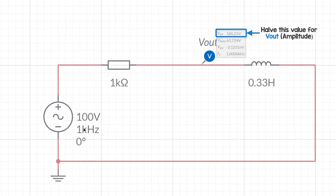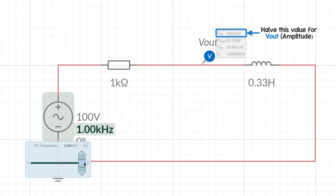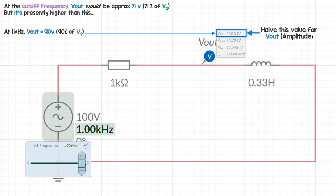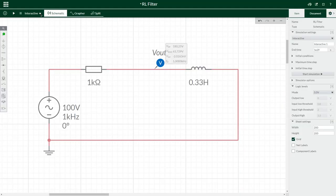So the whole point of this is to see how the output changes with frequency. So simulate and change the frequency, record Vout and plot a graph. You can use paper or Excel. At the cutoff frequency, Vout would be approximately 71 volts, as we have a 100 volt supply amplitude. But at 1 kilohertz, Vout is higher here at 90 volts. So the cutoff frequency must be below 1 kilohertz that we're at now, as this is a high-pass filter and it's gone above the 3 dB or half power point.